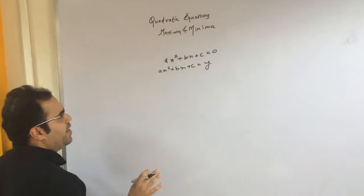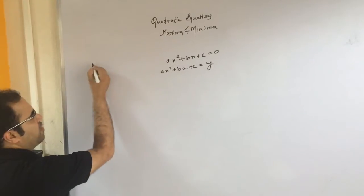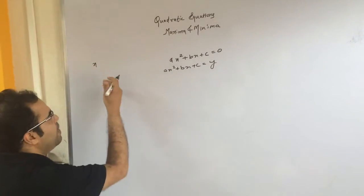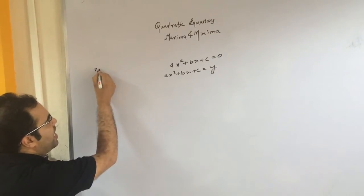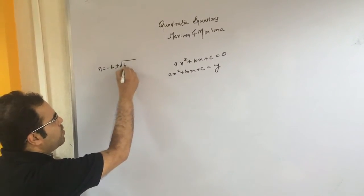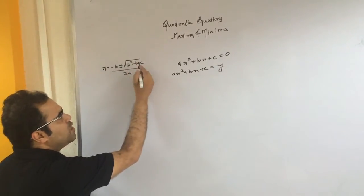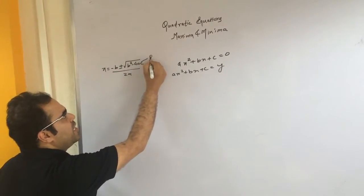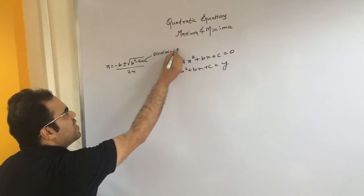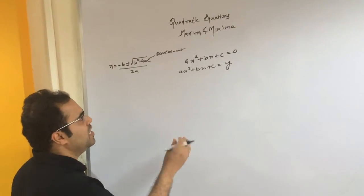Let me denote it by y. All of us are aware of how to calculate roots of the equation. I can calculate roots either by factorization or by the standard formula: x = (−b ± √(b²−4ac)) / 2a. This b²−4ac is known as the discriminant, and this is the game changer as far as the nature of roots are concerned. Accordingly, our graph will vary.